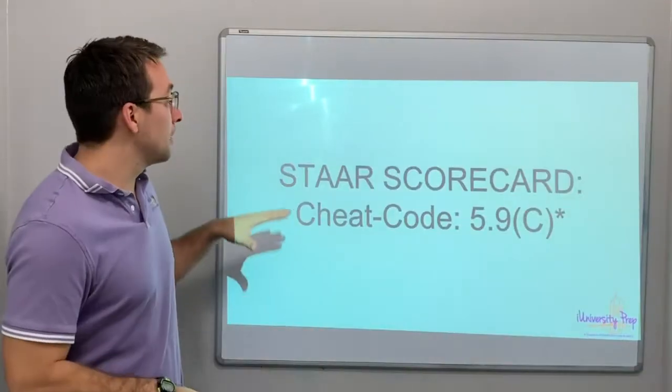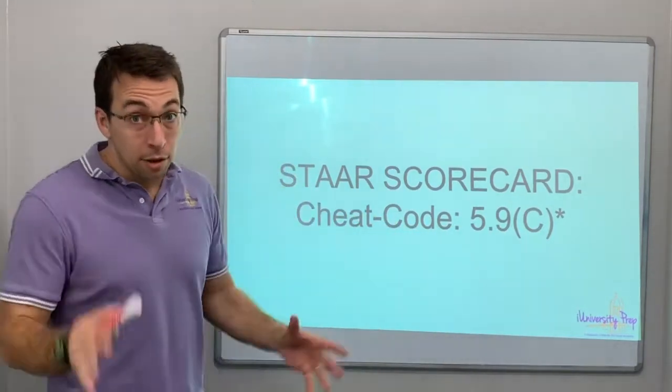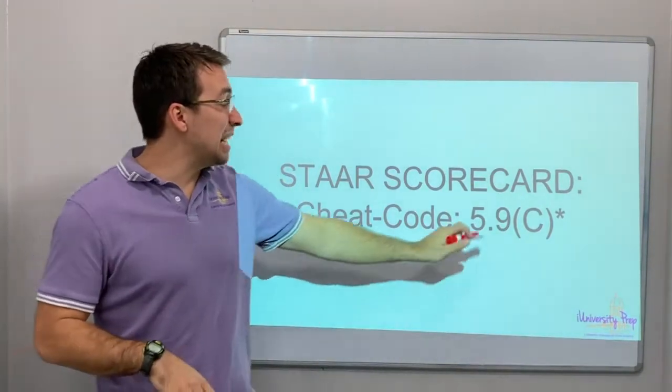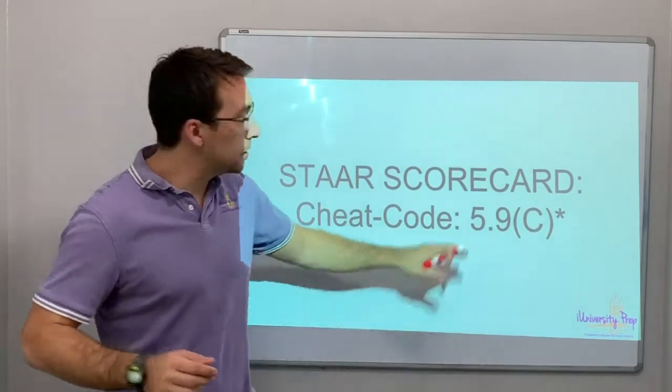Hey, what's up everybody. STAAR Scorecard 5, cheat code 5.9(C), notice the asterisk. Of the 5.9 cheat codes A, B, and C, C is the most frequently asked question on the STAAR test. It's the most important of this grouping of these codes.